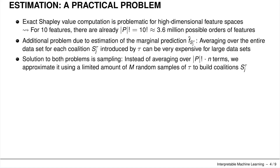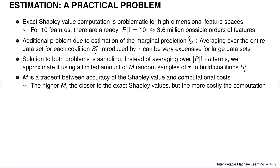We have a solution for both problems: sampling. Instead of averaging over all possible orderings and all observations, we just sample m random orderings to build the coalitions, and we also have a solution for the n terms. Here m is a trade-off between accuracy of the Shapley values and computational cost — the higher m, the closer we are to the exact Shapley values but the more costly the computation.